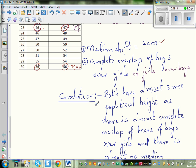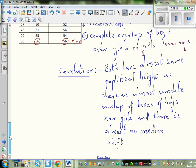So this is my analysis. And finally, from this analysis, I will conclude. This is my conclusion. Both have almost the same popliteal height as there is almost complete overlap of boxes of boys over girls and there is almost no median shift.